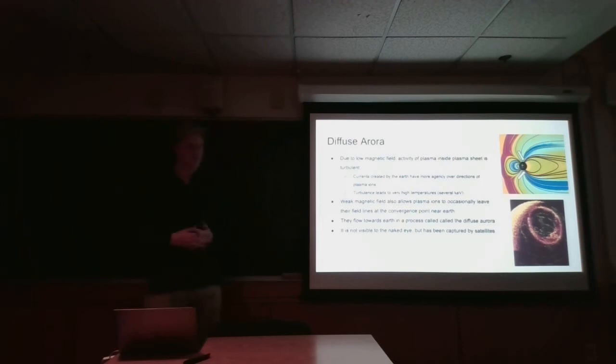Therefore, ions must be coming back to the plasma sheet through some means. And we know that it can't be from the lobes, since they have such a low plasma concentration. So it must be from somewhere else.